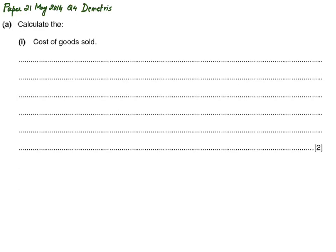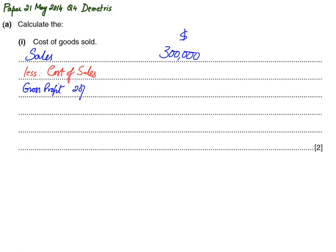We'll use another method. As you may be aware, if we deduct cost of sales from the sales figure we get gross profit. We already have a revenue figure of 300,000. We do not have cost of sales — we need to find it. But if somehow I can find gross profit, I am able to calculate cost of sales by reverse working. This 20 percent is given in the question and is basically a margin.